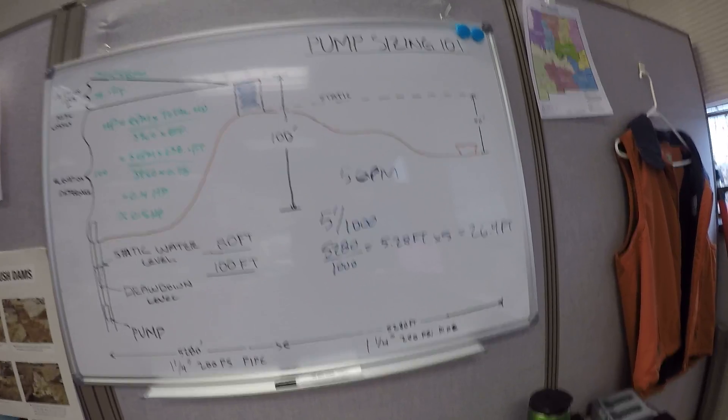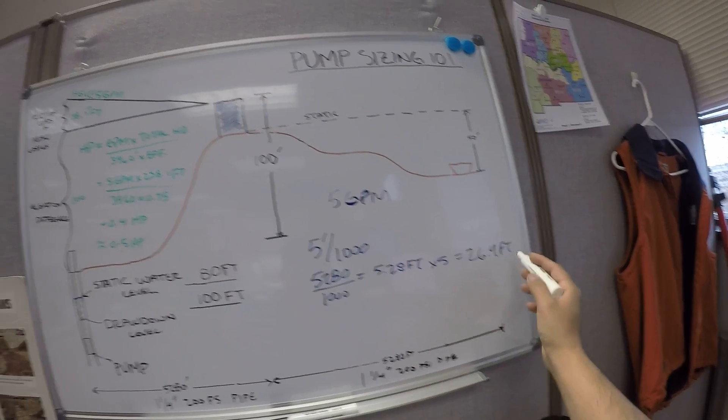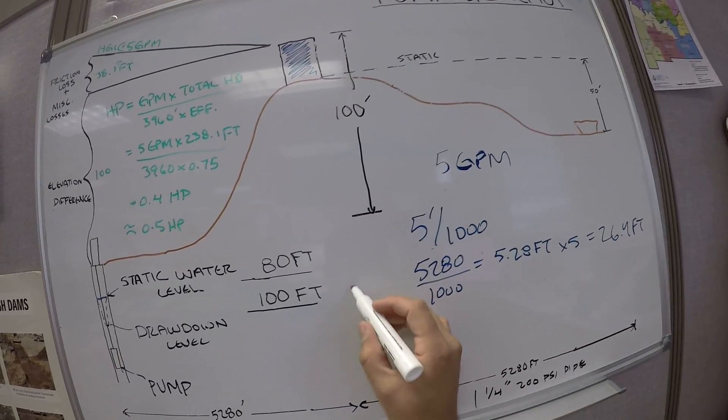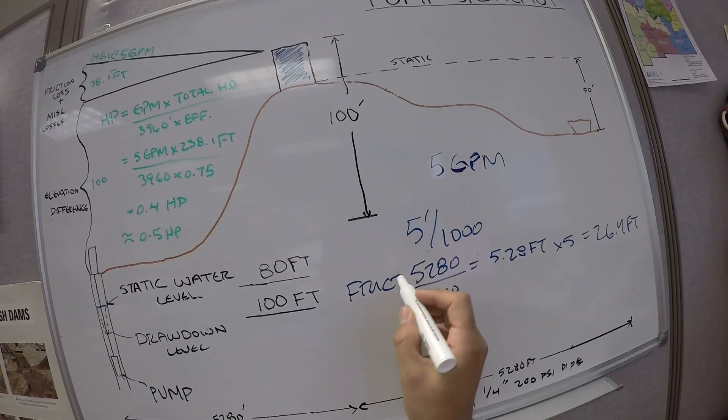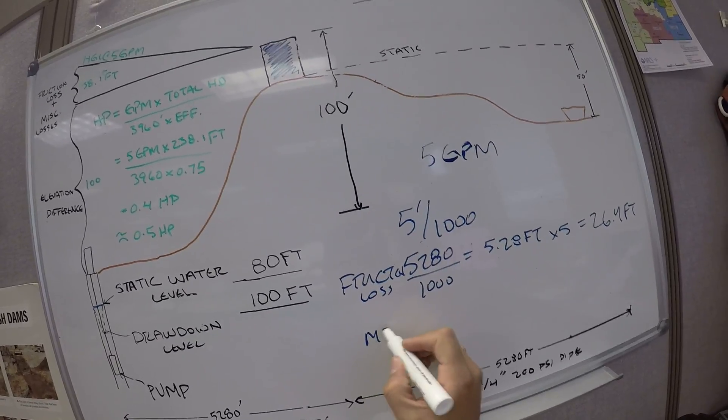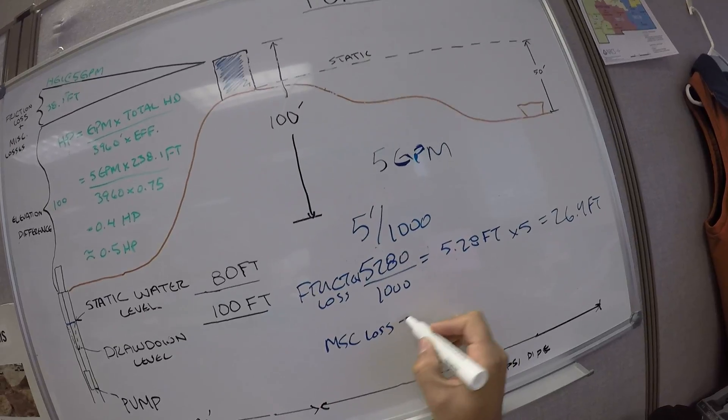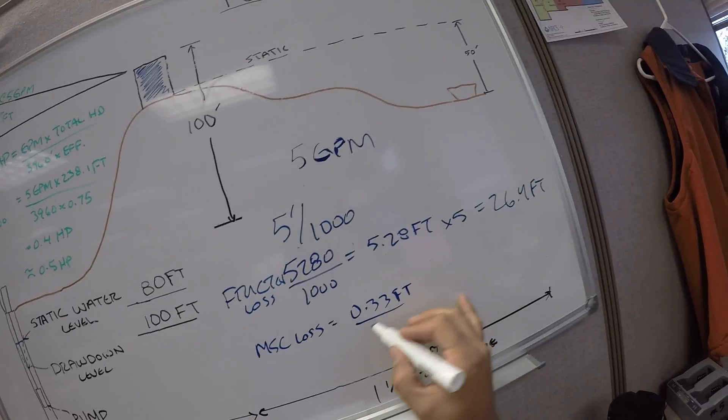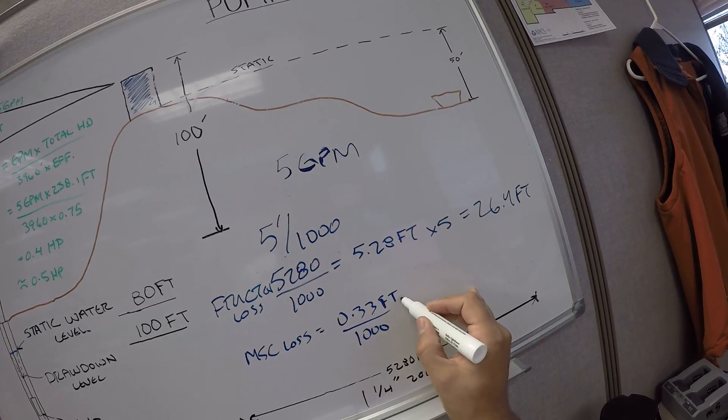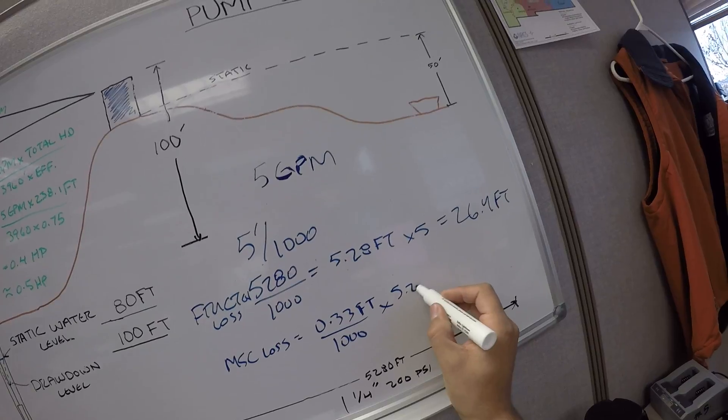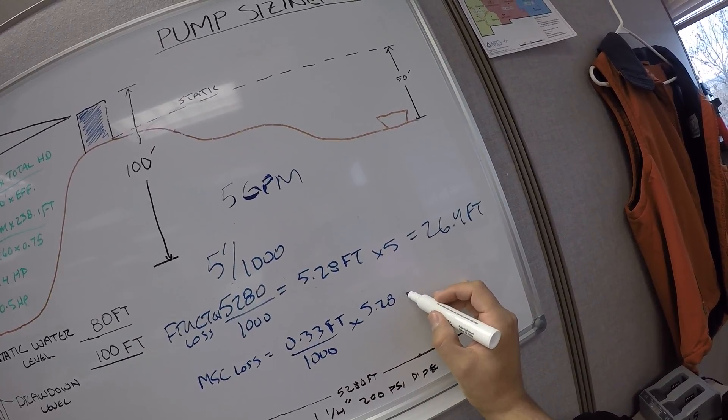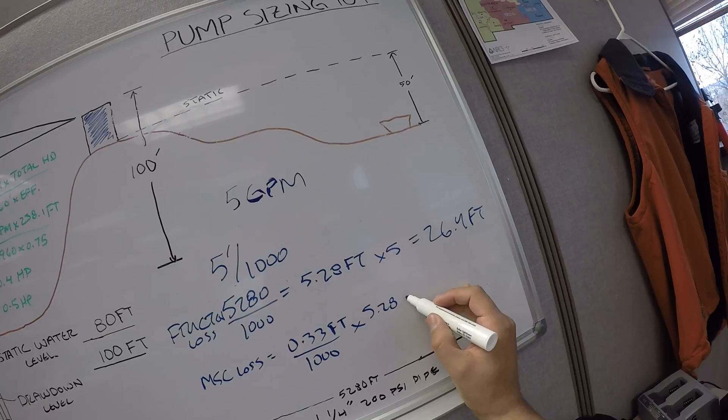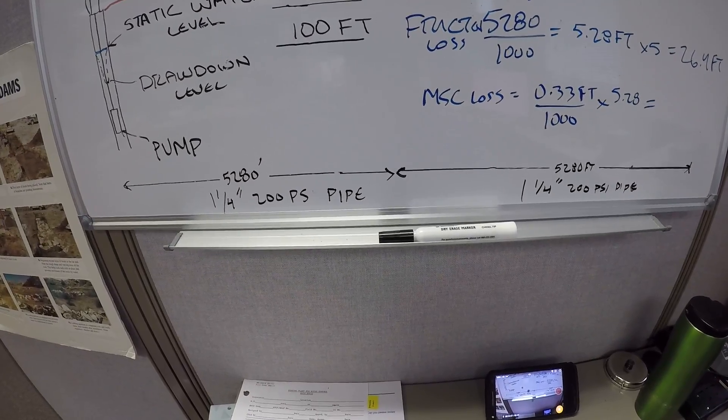And so, there, that's your friction loss. You have to figure that out first, so friction, and then now you got miscellaneous losses, and for the livestock pipeline we're going to use 0.33 feet per thousand. So we're going to multiply that by 5.28, so 0.33 times 5.28, is 1.74.